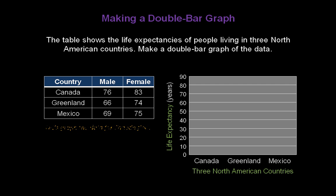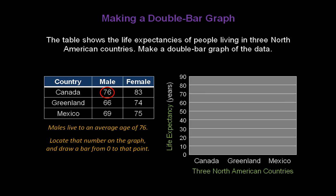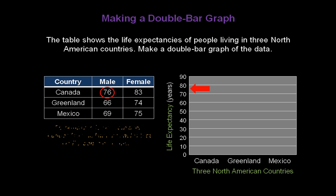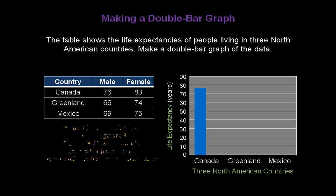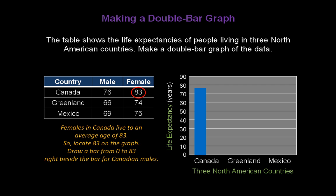With both our x and y axes labeled, we can now go ahead and create our bars. Let's graph the data for Canada first. Males live to an average age of 76 — locate that number on our graph and draw a bar from zero up to that point, but remember to leave room for the female bar right beside it. I made that bar blue. We'll need a different color for the females so we have two different bars, and we'll have a key at the end. Now let's graph the bar for Canadian females — females in Canada live to an average age of 83. Locate 83 on the graph and draw a bar from zero to 83 right beside the bar for the Canadian males.